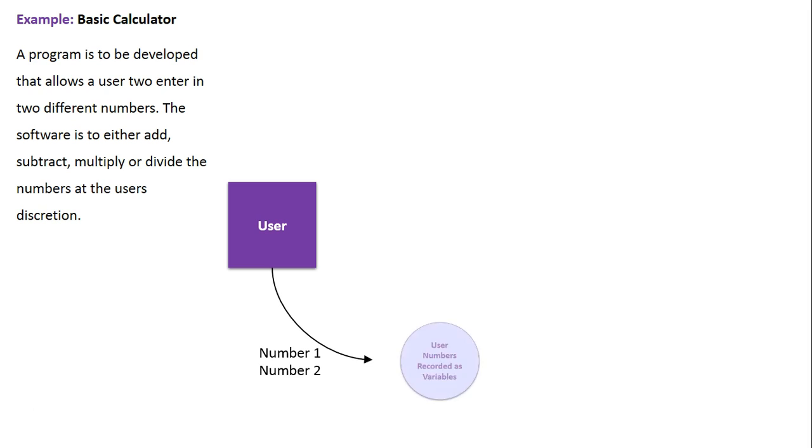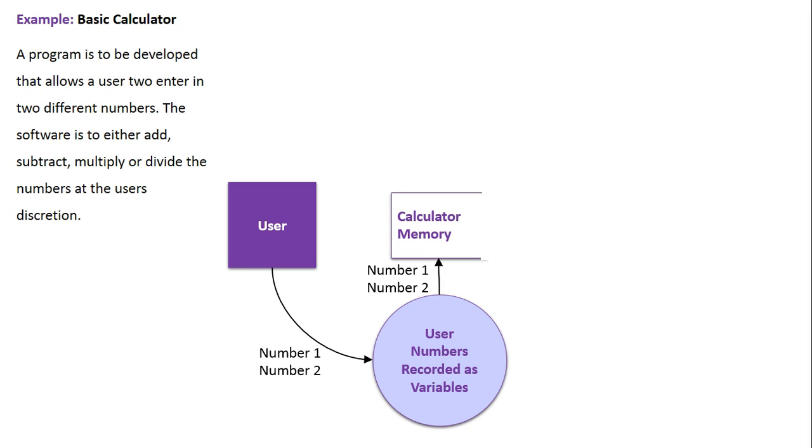Here's our user. They're putting number one and number two into the system. The system first records these numbers as variables. Once the numbers have been recorded, they are stored in the memory of the calculator.